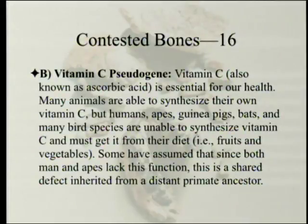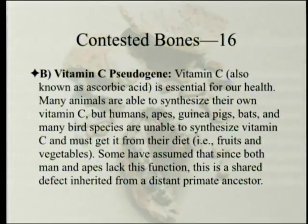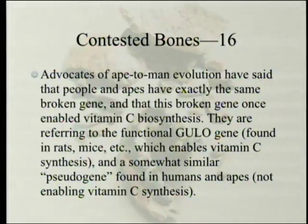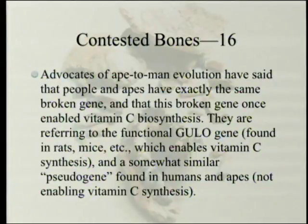B: the vitamin C pseudogene. Vitamin C, also known as ascorbic acid, is essential for health. Many animals are able to synthesize their own vitamin C, but humans, apes, guinea pigs, bats, and many bird species are unable to synthesize vitamin C and must get it from their diet—fruits and vegetables. Some have assumed that since both man and apes lack this function, this is a shared defect inherited from a distant primate ancestor. Advocates of ape-to-man evolution have said that people and apes have exactly the same broken gene—the functional GULO gene found in rats, mice, etc., which enables vitamin C synthesis—and a somewhat similar pseudogene found in humans and apes that does not enable vitamin C synthesis.